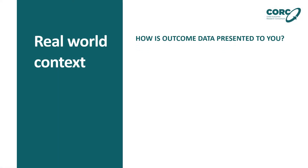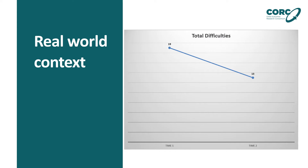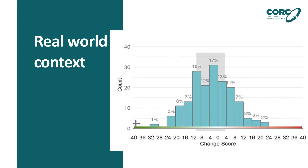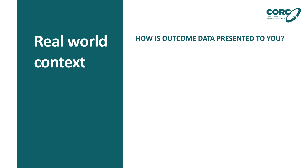Can you think of a time when outcome information from your service was presented to you? Maybe you were hearing it at a team meeting or a management meeting, or perhaps discussing it with a commissioner. Perhaps you saw some tidy graphs or tables. It can look quite clean cut in these graphs, and there may be a tendency to draw immediate conclusions. But the reality is that child and youth mental health data is messy and complex.